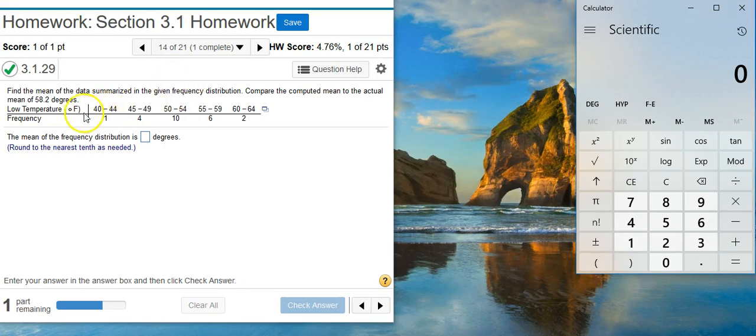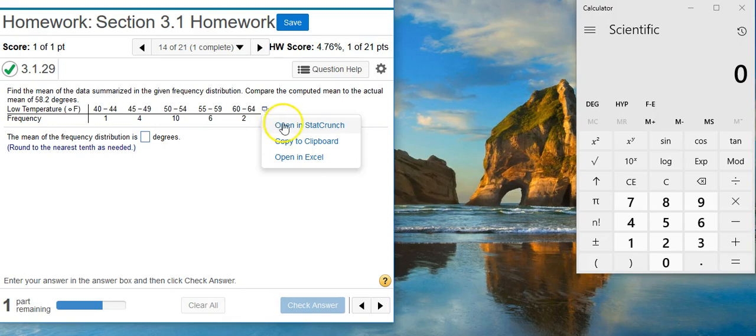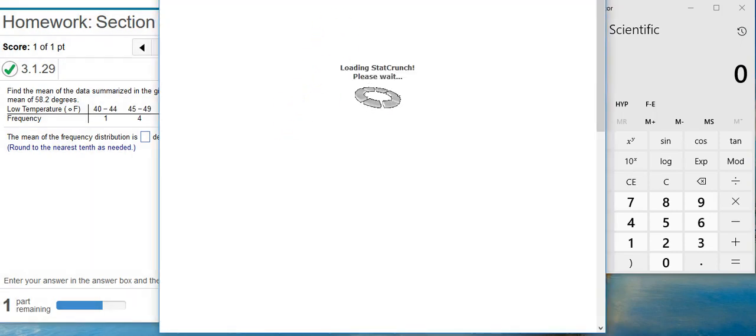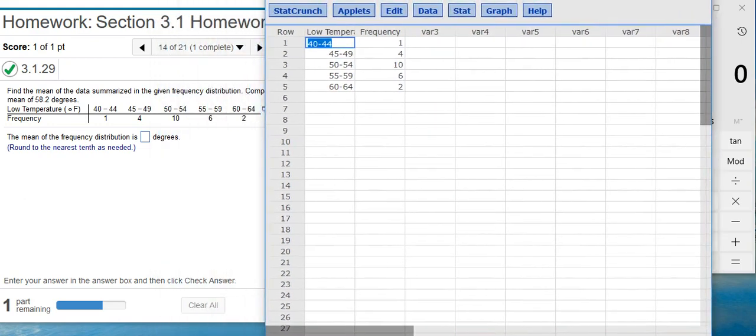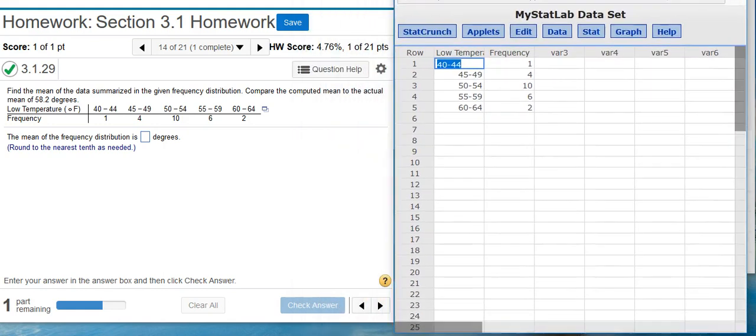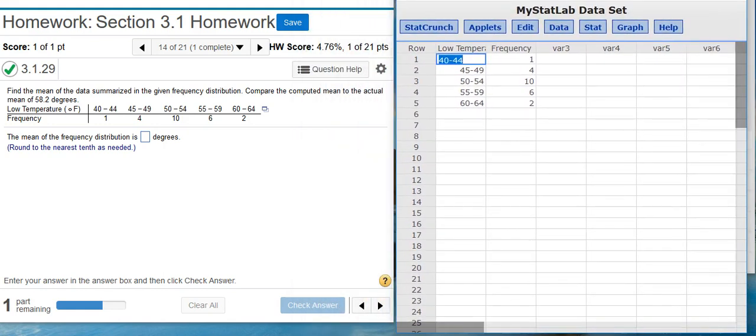So we have a table here listing temperatures and frequency counts. Let's go ahead and click this icon to the right. We're going to open this in StatCrunch and let's just move our table over here a little bit. There, now that we resized our window we can see everything.